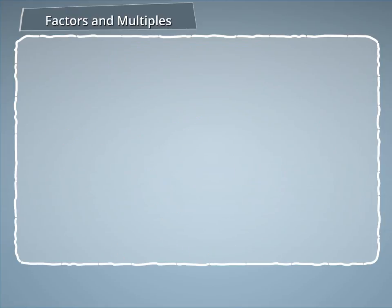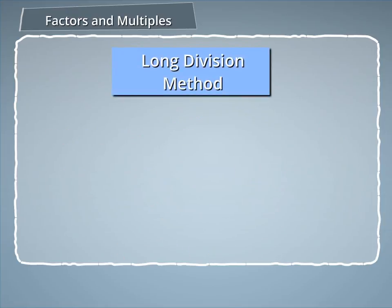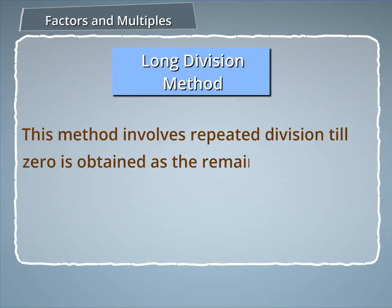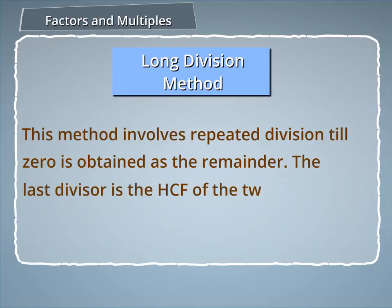Now let us understand the Long Division Method to find the HCF of two numbers. This method involves repeated division until 0 is obtained as the remainder. The last divisor is the HCF of the two given numbers.